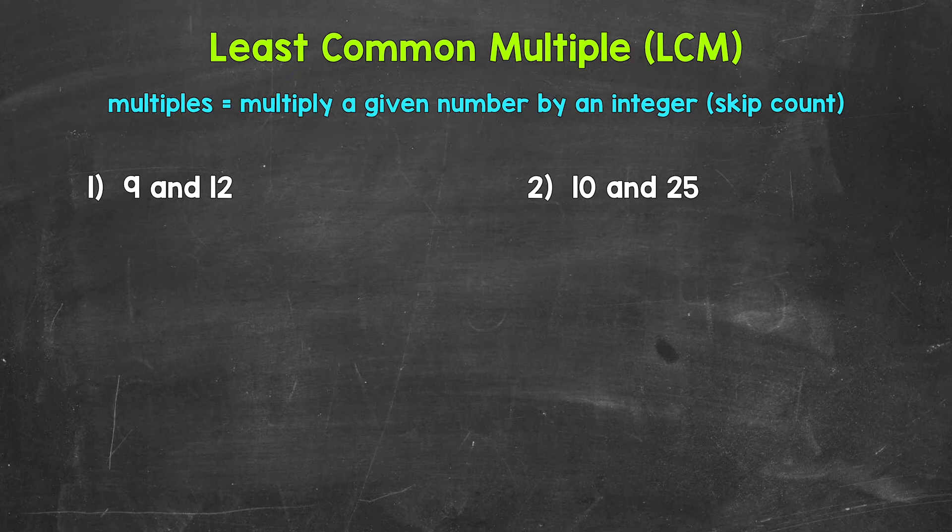When we think of the multiples of a number, we need to think about the numbers we get when multiplying that given number by integers. A simpler way to think about multiples is to think about skip counting. So all of the numbers something is going to hit when you count up by that number. Those are all going to be multiples. This will make a lot more sense as we go through our examples.